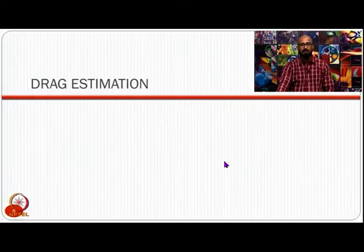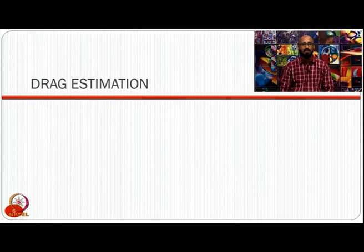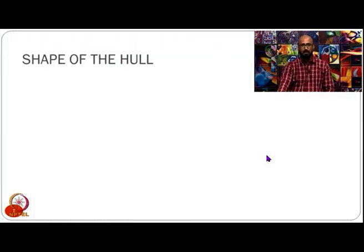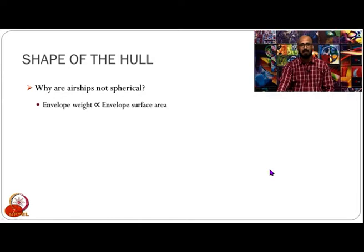Let us start with the drag estimation. Given an airship envelope with certain components attached to it, how exactly would we estimate the drag? Before that, I want to pose a question: why are airships not spherical? Spherical airships would give us a lot of advantages, yet it is very unlikely to see a spherical airship. What are the benefits of a spherical airship?